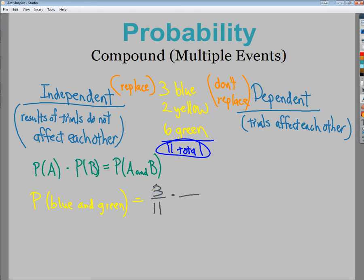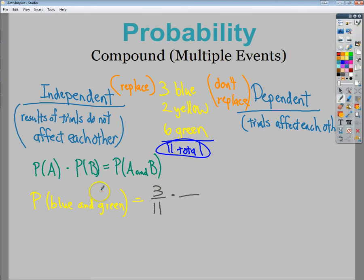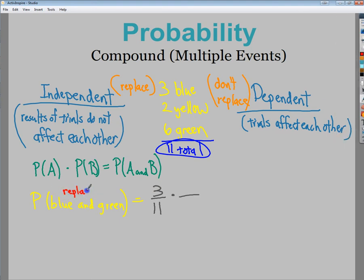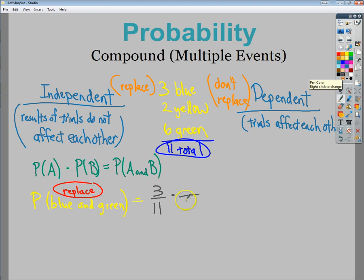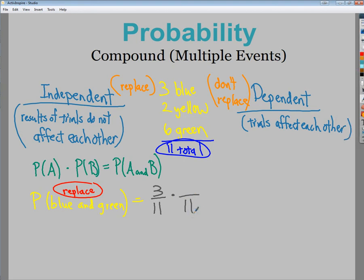Now in this case, blue and green, I'm under the replace option. So look for somewhere in your problem to see if you replaced it or not. In this case, I am replacing it. So I get 11 marbles to choose from because I could get that same one again. But I want to know what the probability of blue and then green would be. So there are 6 green. So the probability of that happening would be 18 over 121. The probability of getting a blue and a green in this situation is 18 over 121.